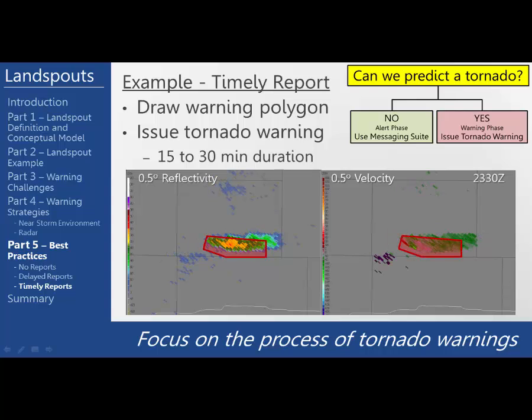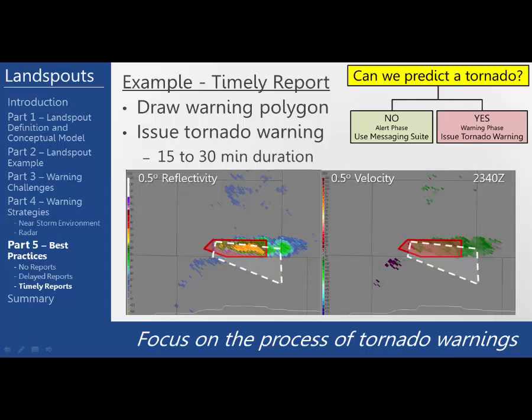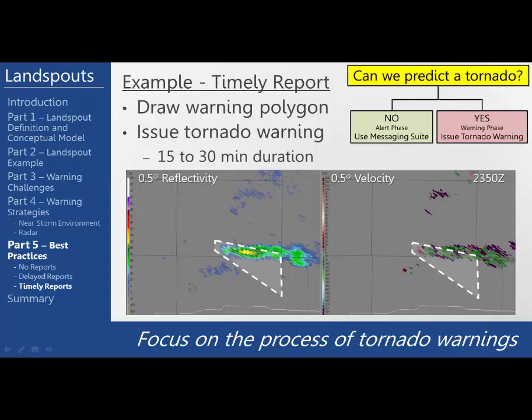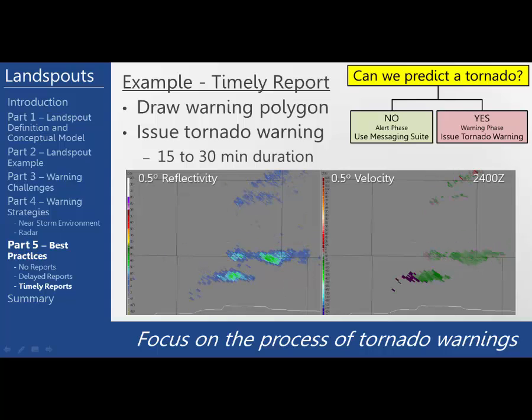The warning should be no longer than 30 minutes since these tornadoes are short-lived. You should also drop a warning polygon downstream, but in this case the storm dissipates and there's no need to reissue since there's no longer temporal and spatial continuity to issue a tornado warning.